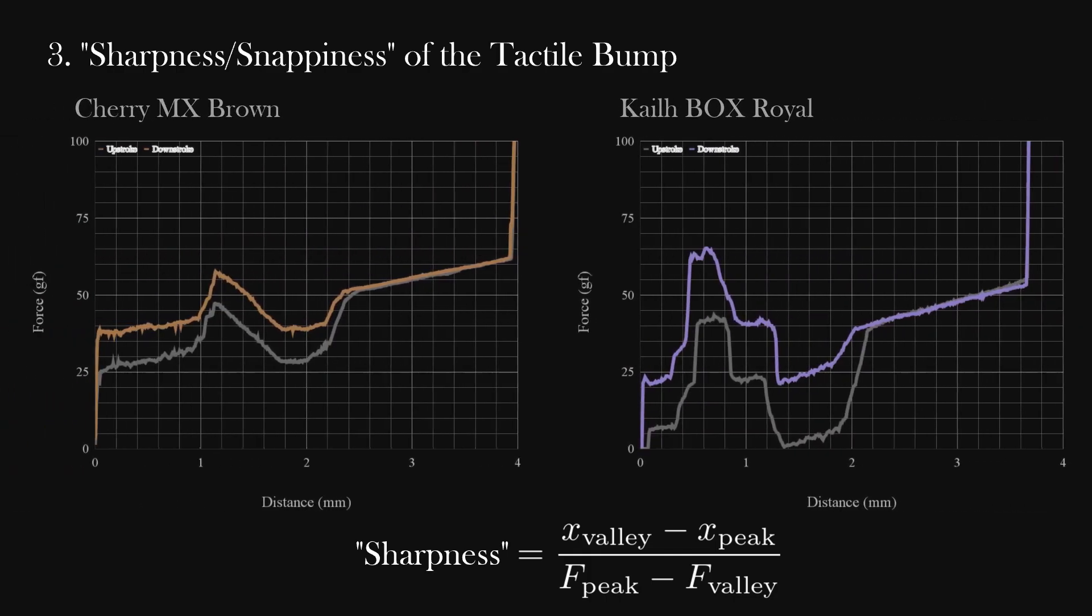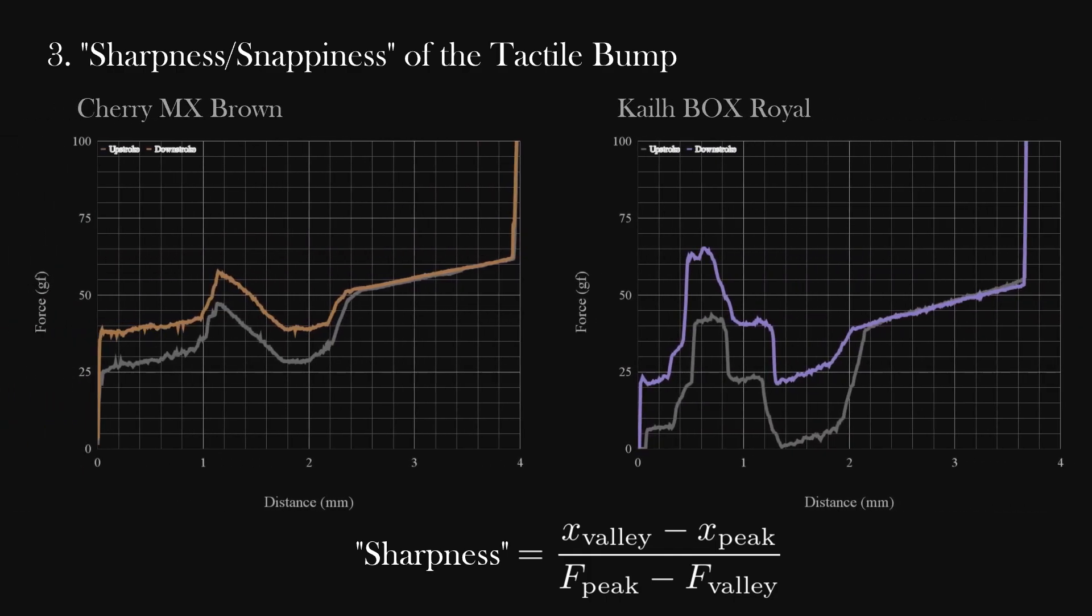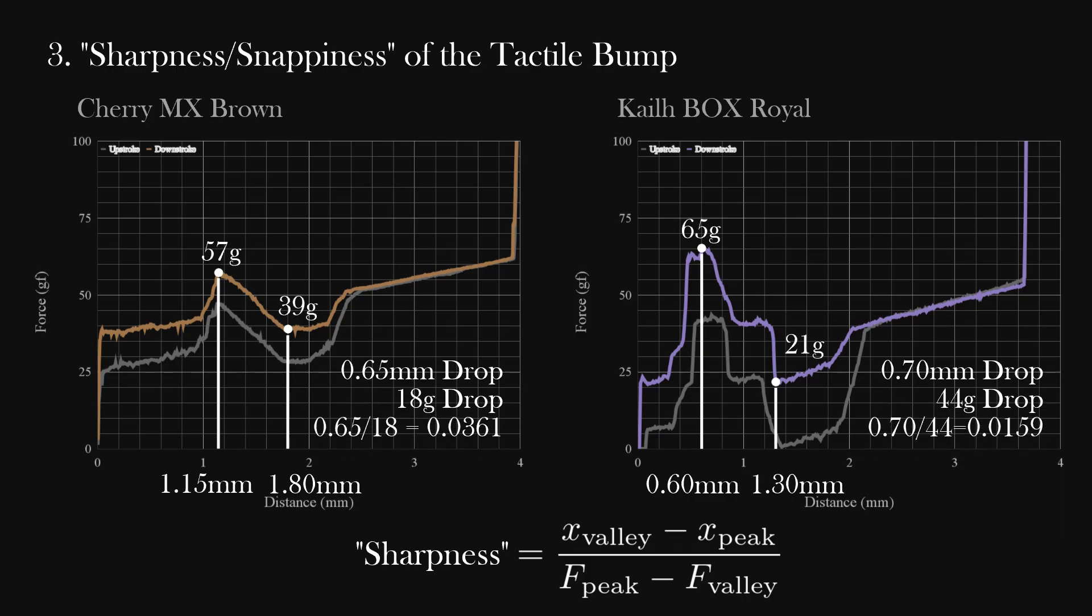Take a look at Cherry Browns versus Kailh Box Royals. Box Royals are known to be the king of sharp tactility, so much so that no one wants to use them because it's just too much. If you take only the distance, Browns and Royals have around the same sharpness. But when I compare them, Browns definitely feel rounder than Royals. And if you divide the distance by the drop in force, it gives a greater value for Browns corresponding to a rounder bump.